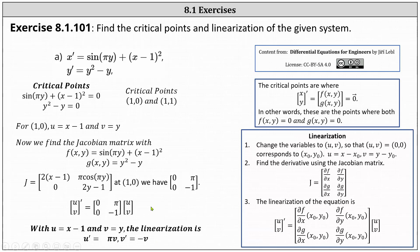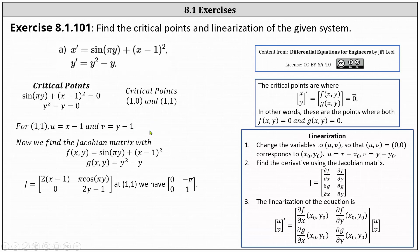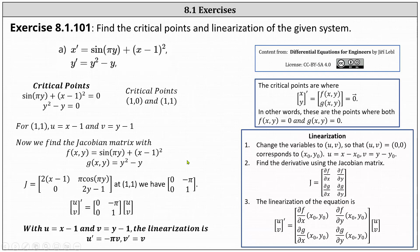Now we go through the same process again with the critical point one comma one. For the critical point one comma one, we have u equals x minus one and v equals y minus one. The Jacobian matrix is the same, but now we evaluate it at the point one comma one, which gives us the two by two matrix with entries zero, negative pi, zero, one. Therefore, the linearization, when u equals x minus one and v equals y minus one, is the derivative of the vector u, v equals the two by two matrix with entries zero, negative pi, zero, one, times the vector u, v. With u equal x minus one and v equal y minus one, the linearization is u prime equals negative pi v, and v prime equals v.